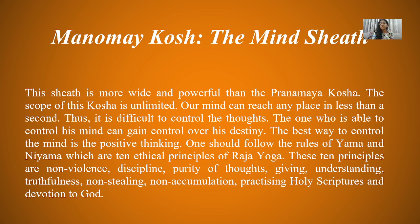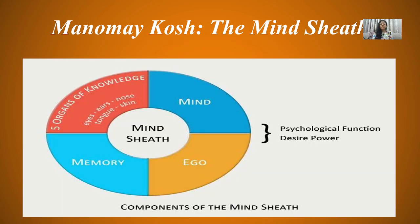The ten ethical principles include ahimsa, anushasan (discipline), purity of thoughts, giving or tyaga (renunciation), understanding, truthfulness, non-stealing or asteya, non-accumulation, and their practice — all of which help develop the Manomaya Kosh. The mind sheet consists of mind, ego, and memory. The five organs of knowledge — nose, tongue, skin, and the other senses — along with psychological functions, desires, mind, ego, memory, and senses together make up the mind sheet.